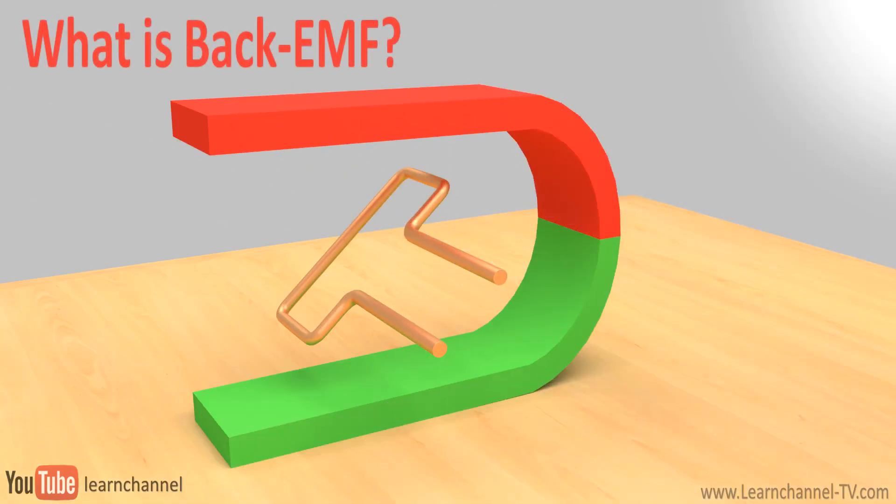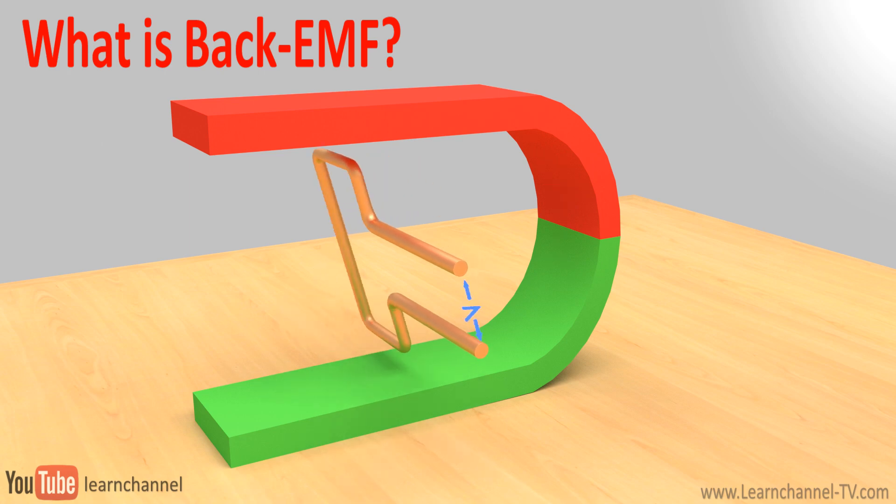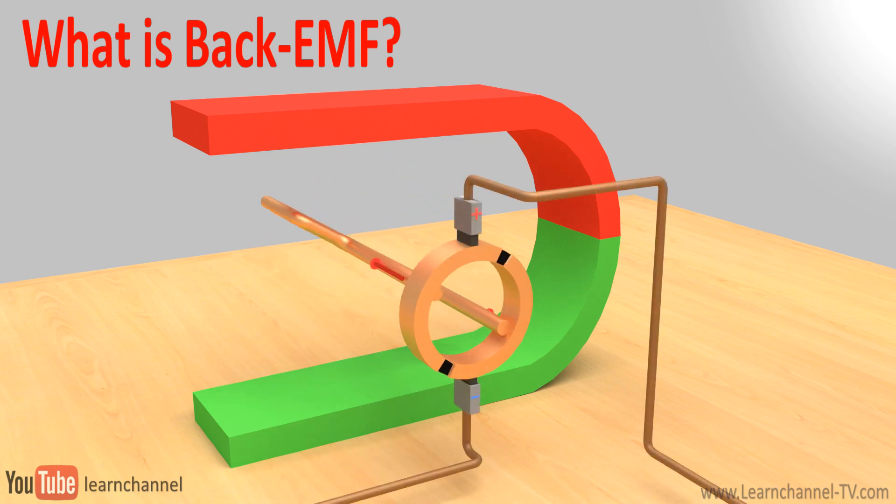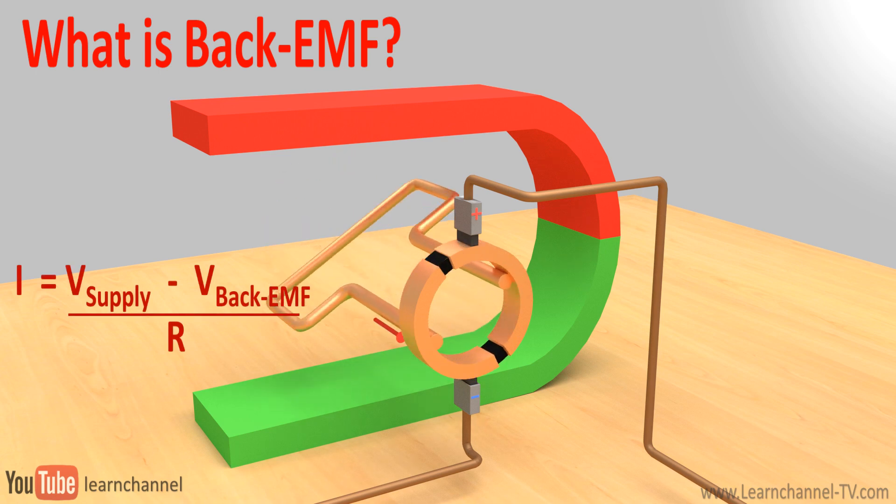Voltage is induced within a loop as soon as it rotates within a magnetic field, according to the principle of electromagnetic induction. This effect also occurs when we apply an external voltage to this loop. This internal EMF, which we call now back EMF, or counter EMF, opposes the external voltage according to Lenz's law, and therefore reduces the armature current.